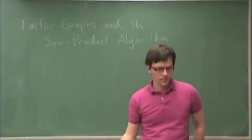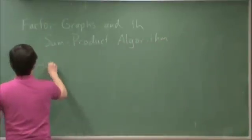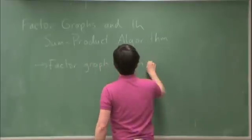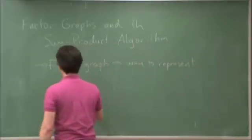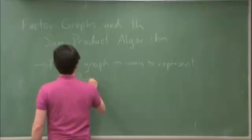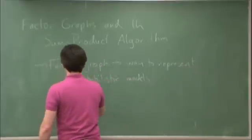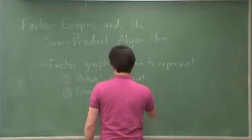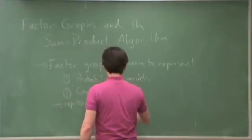The idea of a factor graph is that it's a way to represent one of two things, we'll see it in both contexts. Firstly, probabilistic models. And secondly, constraints. Where, in either case, they have to be represented as a product of factors.